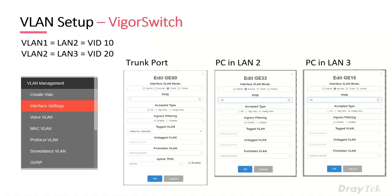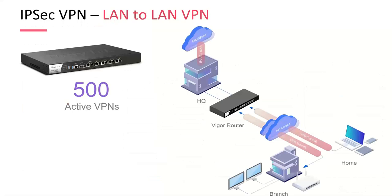There's a lot more detail with VLANs — we have other presentations that cover this in much more depth with the Vigor switches. Now let's talk about IPsec VPN. LAN-to-LAN VPN is really common, and 500 VPN tunnels is a strong number. Other products in the range typically do around 32 tunnels or up to 300 Mbps, while the 3910 really excels in total VPN capabilities.